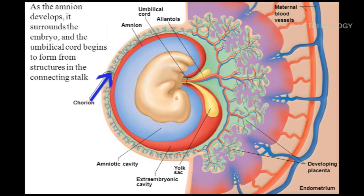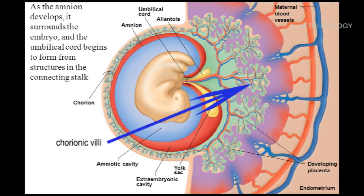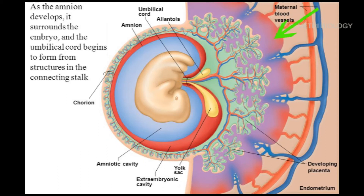The chorion is a double-layered membrane formed by the trophoblast and a part of the mesoderm. Chorion is the outermost layer. It encloses the embryo and other membranes, and also helps in the formation of the placenta. Trophoblast cells form several finger-like projections called chorionic villi, which carry fetal blood. These villi are surrounded by sinuses which contain maternal blood.